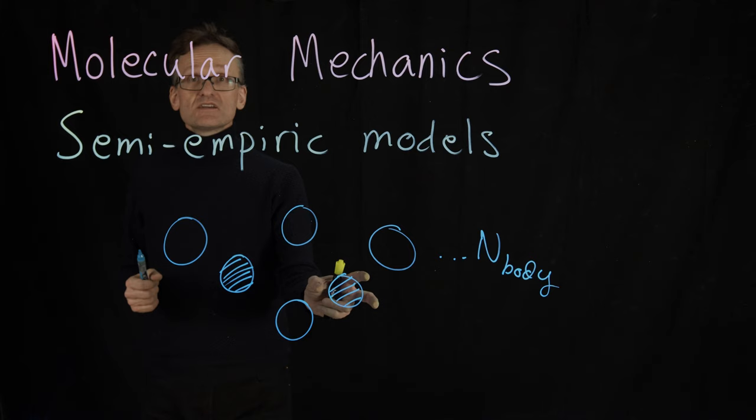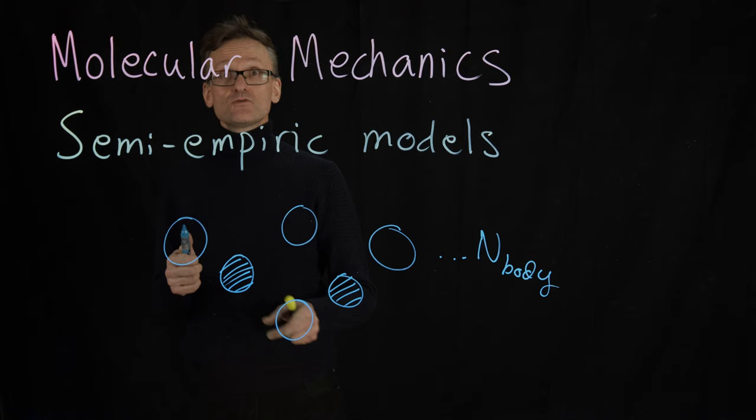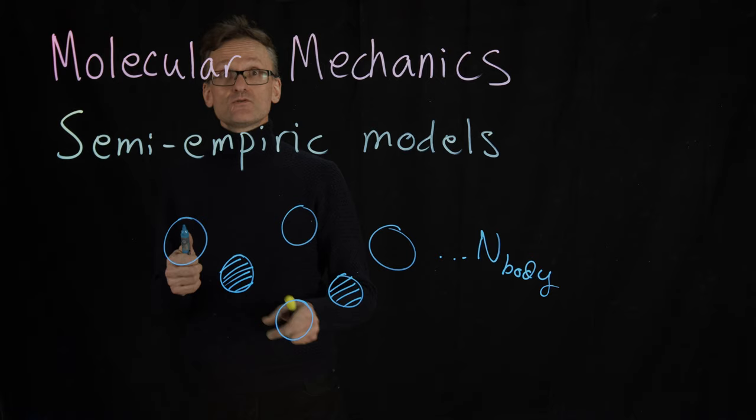But if I instead choose to approximate that with a pairwise interaction, if I still use the parameters that I derived theoretically that would apply to the n-body interactions, I have introduced an error.